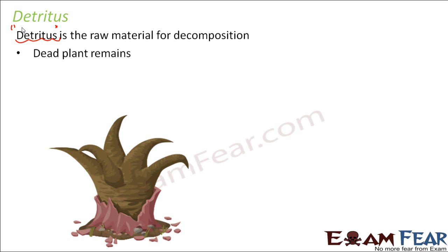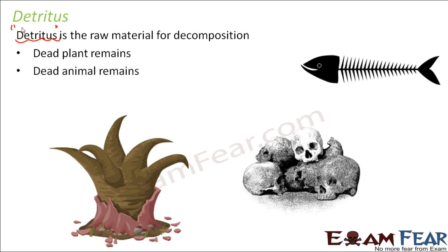What forms the detritus? Dead plant remains could be detritus; dead animal remains could be detritus, because this is what the decomposers feed upon. Until and unless you do not have dead and decaying matter, there is no purpose for decomposers and no point in the process of decomposition. Additionally, fecal matter — the excreta of different organisms — also forms a part of detritus.